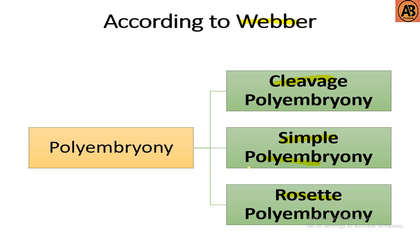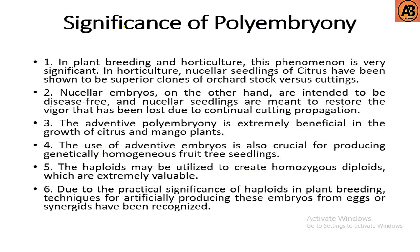There are some significant applications of polyembryony in plant breeding and horticulture. New nucellar seedlings of citrus have been shown to be superior clones of orchard stock versus cuttings. The nucellar embryos are intended to be disease-free, and nucellar seedlings are meant to restore the vigor that has been lost due to continual cutting propagation. Adventive polyembryony is extremely beneficial in the growth of citrus and mango plants.